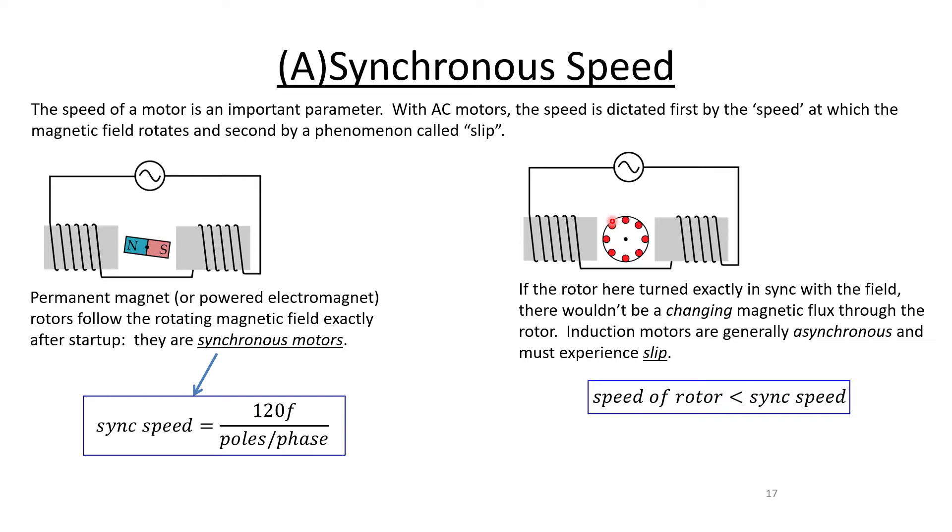When you have that current running through those bars, you will have a force on the rotor because it's in a magnetic field, and so you'll feel torque on the rotor. What we talked about at the end of the last video is the idea that you need this thing called slip.